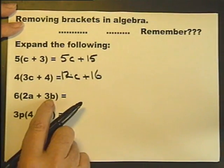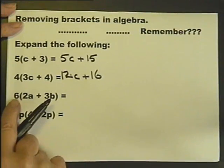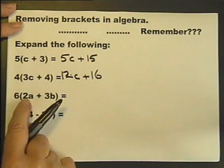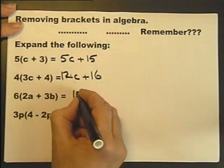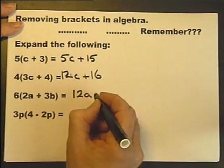Multiply both of these terms by the 6. Everything inside the bracket is multiplied by what's outside. So multiply 2A by 6. 6, 2 is 12, so 6, 2A is 12A. 6 plus 3B is plus 18B.